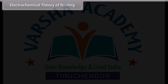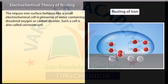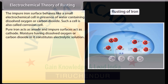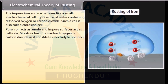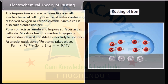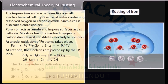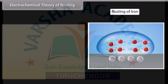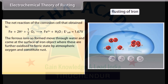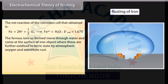Electrochemical theory of rusting. According to this theory, the impure iron surface behaves like a small electrochemical cell — also called a corrosion cell — in the presence of water containing dissolved oxygen or carbon dioxide. Pure iron acts as anode and impure surfaces act as cathode. Moisture with dissolved oxygen or CO₂ constitutes the electrolytic solution. At the anode, oxidation of iron atoms takes place; at the cathode, electrons are picked up by H⁺ ions, which reduce the dissolved oxygen. The ferrous ions formed move through water to the surface, where they are further oxidized to ferric state by atmospheric oxygen, constituting rust.